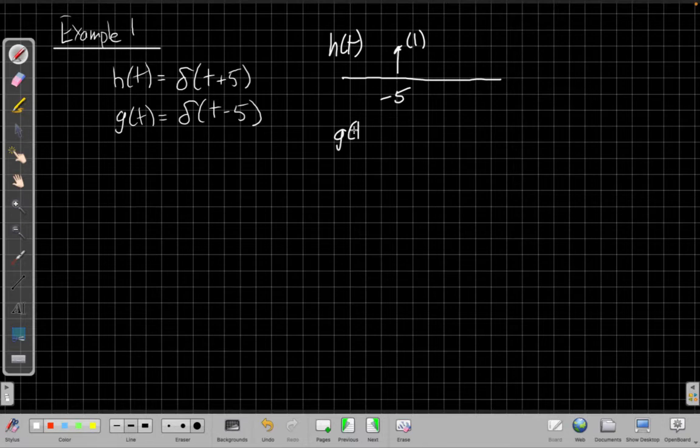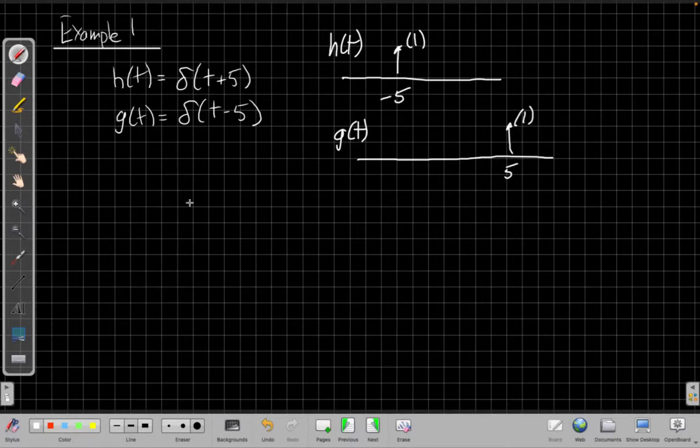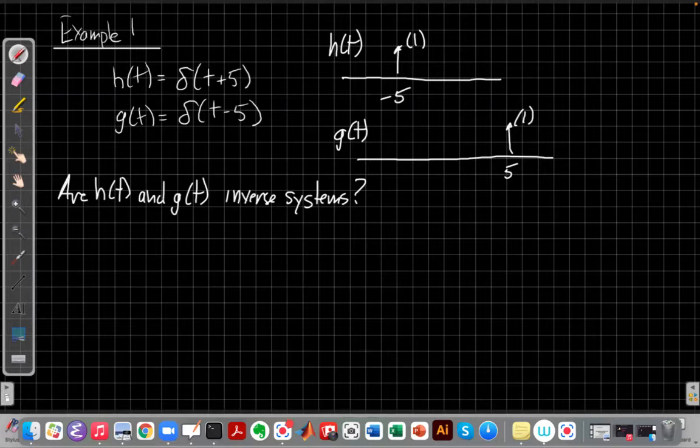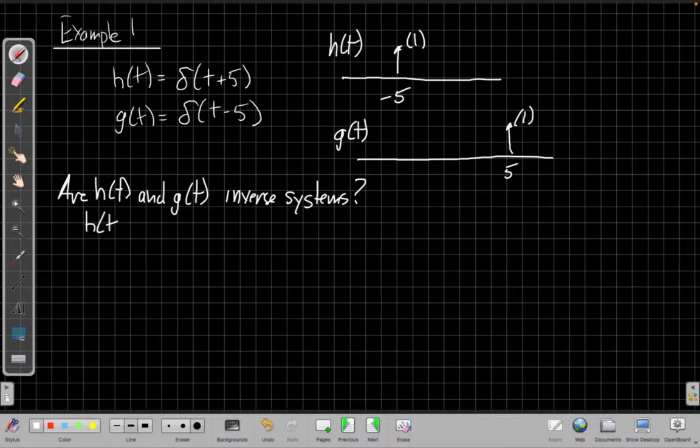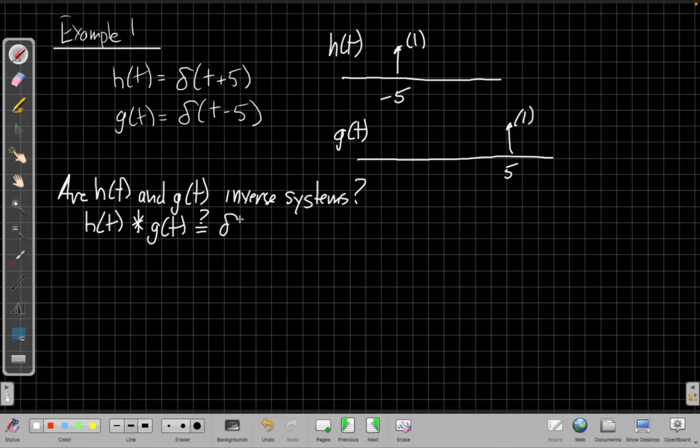And my g(t) is an impulse that does at time plus five. So the key to solving this, right, to say if r h(t) and g(t) inverse system. Well, to answer that question, like we saw on the previous page, we need to say r, that's the same as saying if I convolve h(t) with g(t), do I get delta(t).